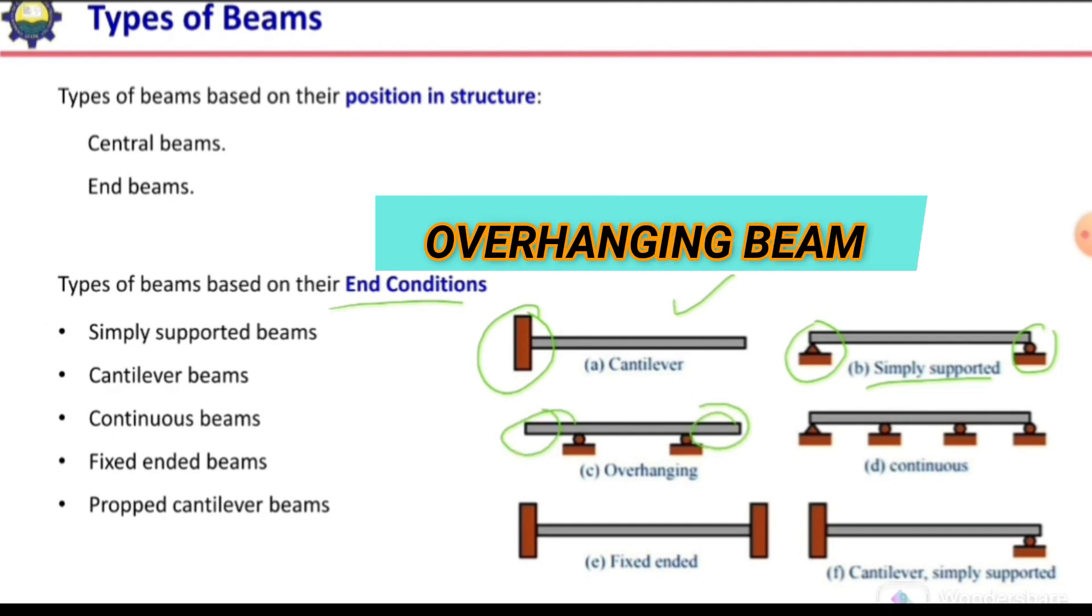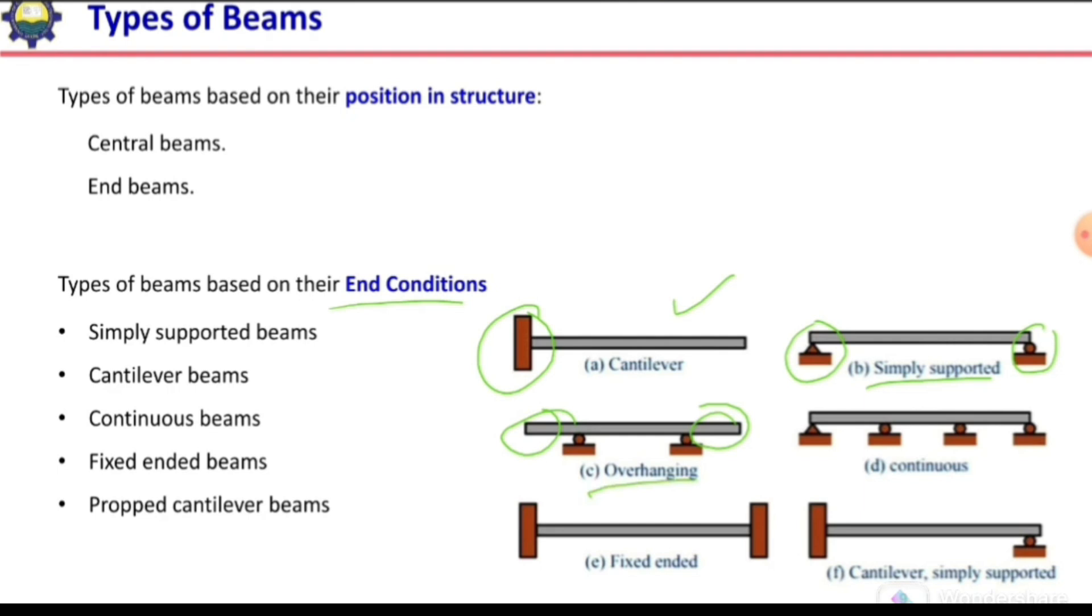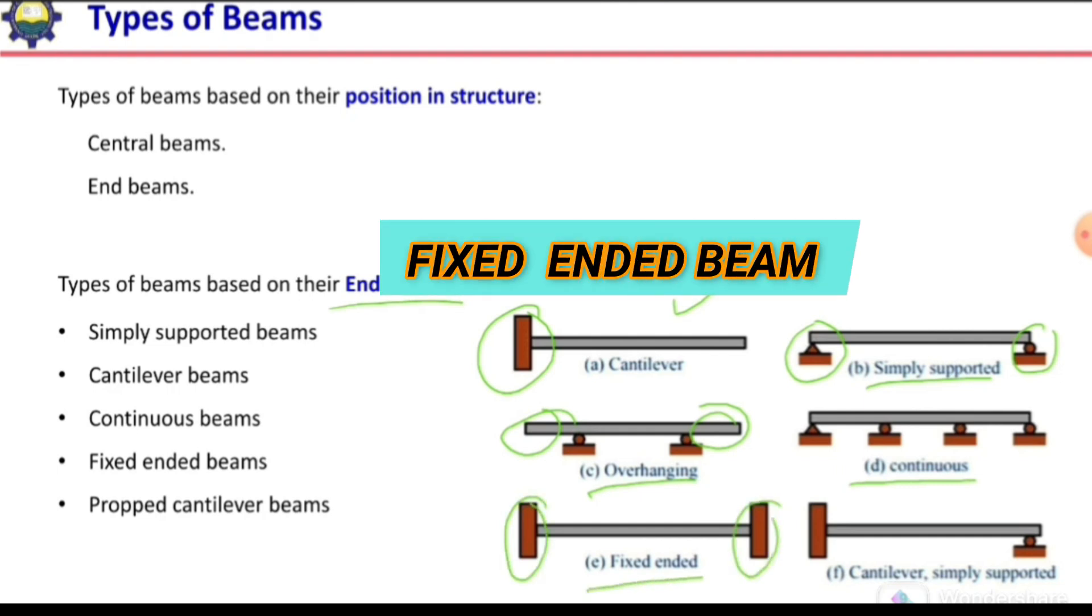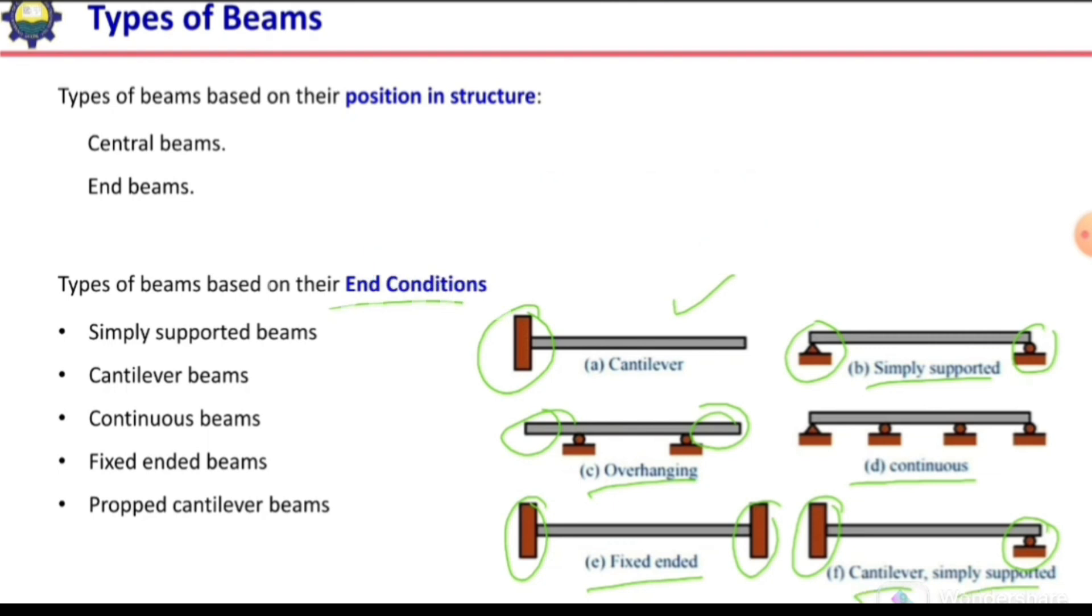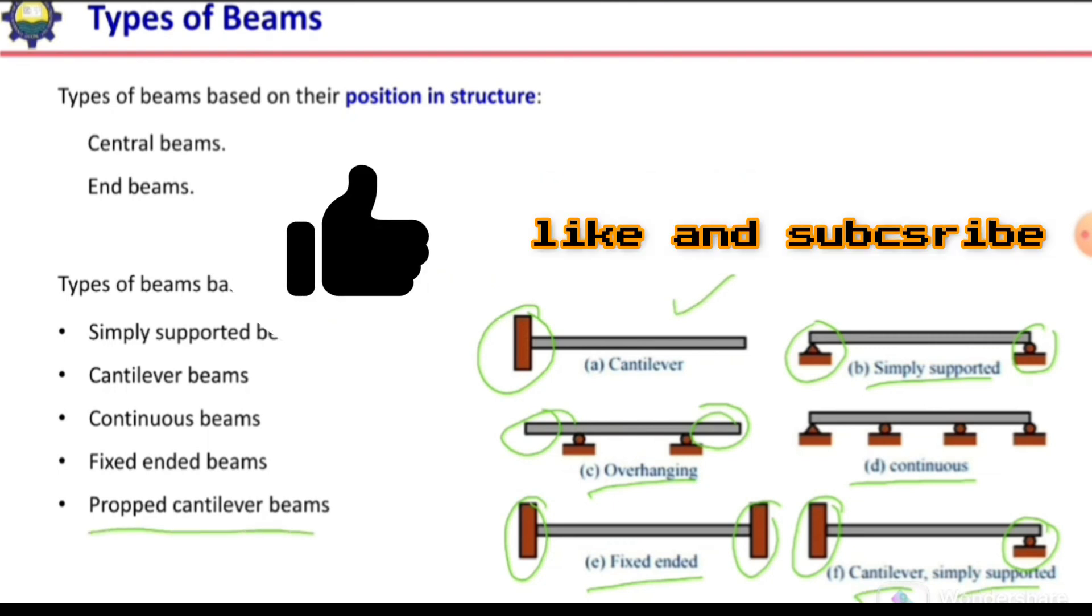If we have more than two supports in the beam, then it will be termed as continuous beam. If both ends of the beam are fixed, it will be termed as fixed ended beam. And if we have one end fixed and the other end roller, it will be termed as cantilever simply supported or we can term it as a propped cantilever beam.